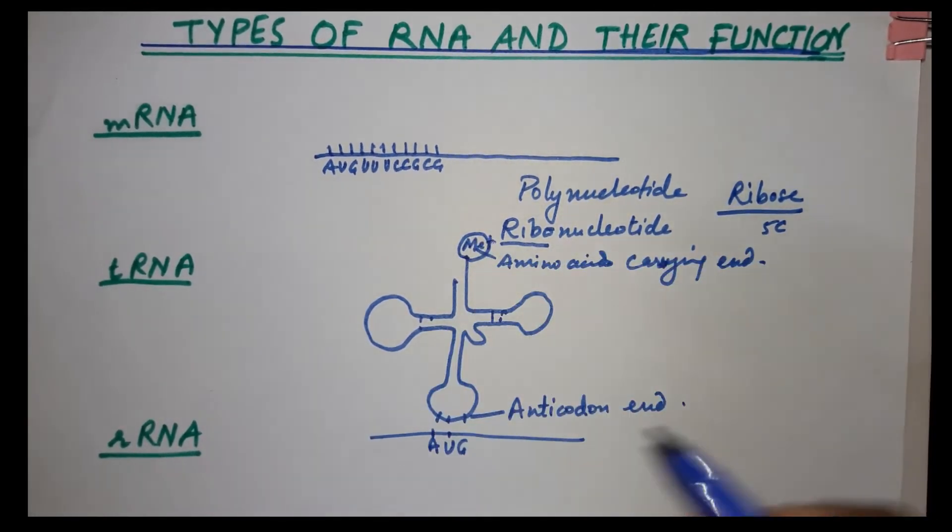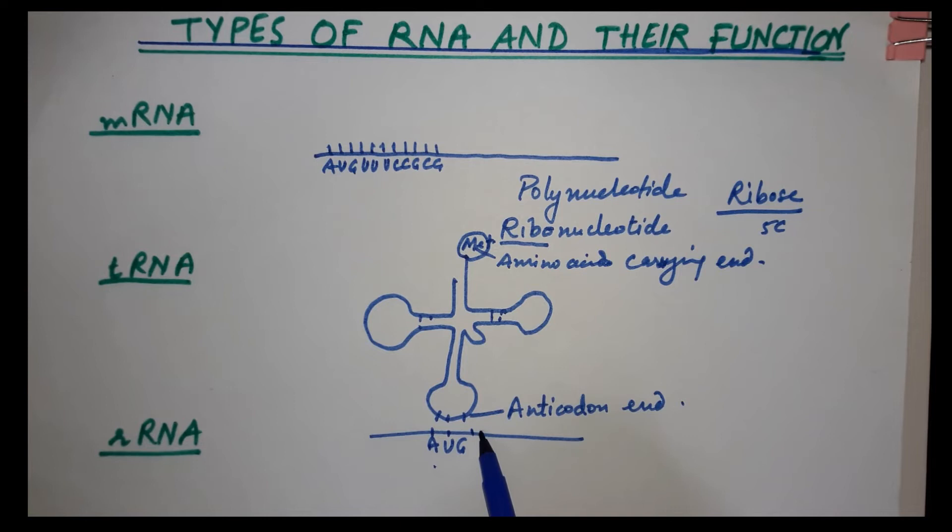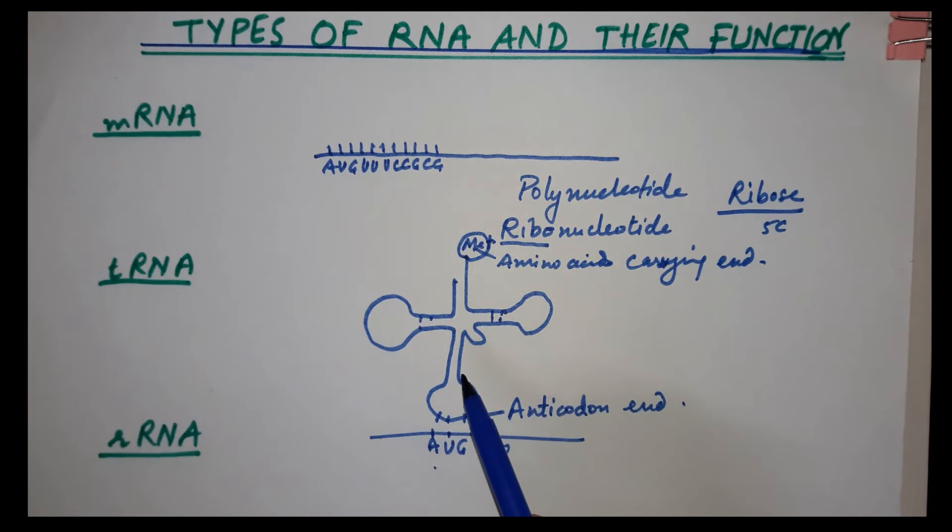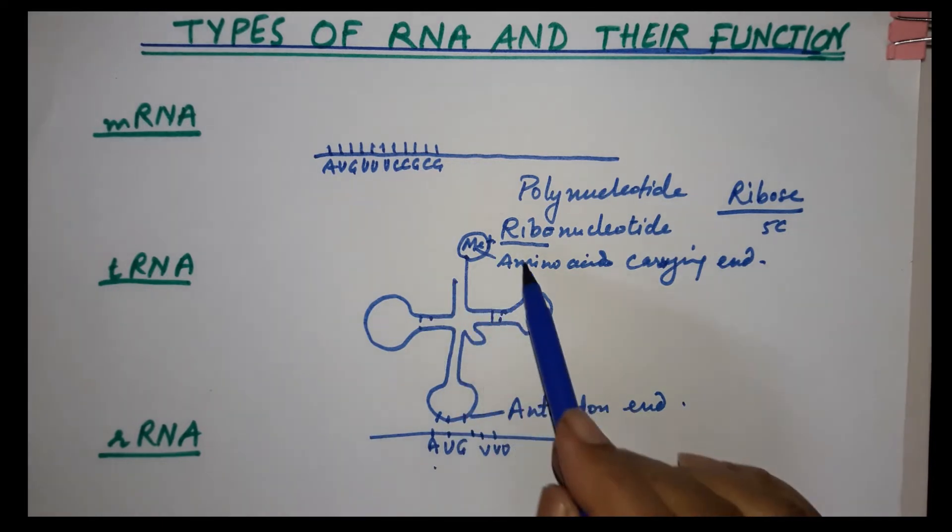Suppose here is UG codon. The corresponding amino acid like methionine according to the genetic code for AUG. For UUU, the amino acid phenylalanine is carried. Transfer RNA's function is to read whatever code is on messenger RNA.